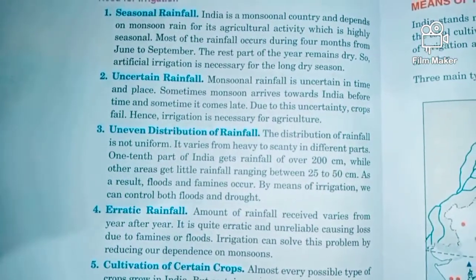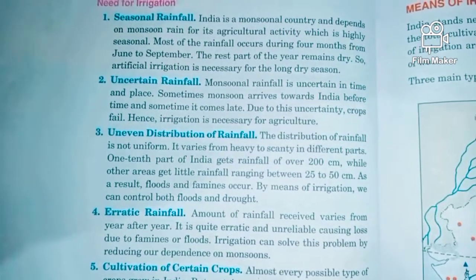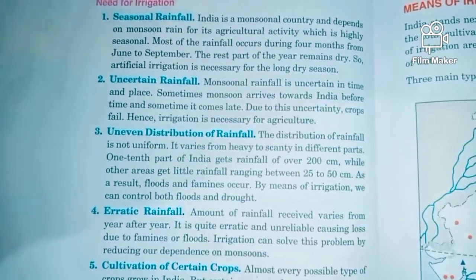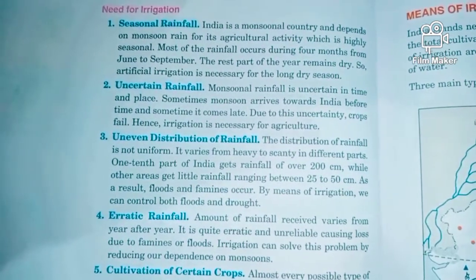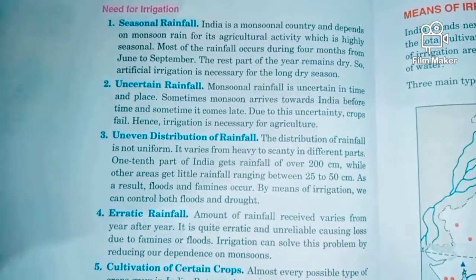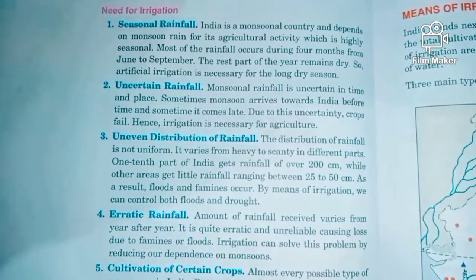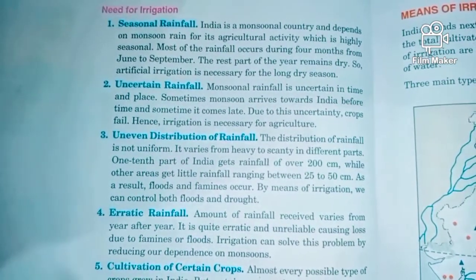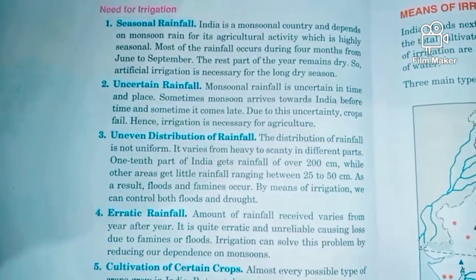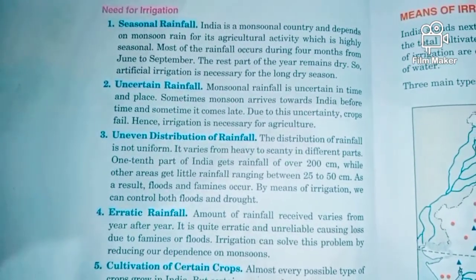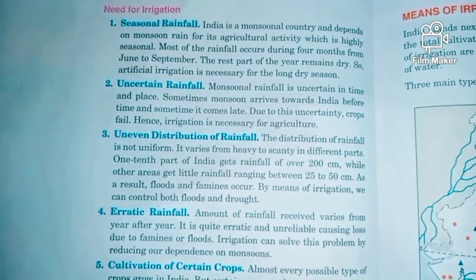Rainfall is uncertain in both time and place. According to the June-to-September season, it may come or it may not, and it varies from place to place. Sometimes in India rainfall comes very late, and sometimes due to this uncertainty the crops fail — and here we need to apply irrigation for agriculture.